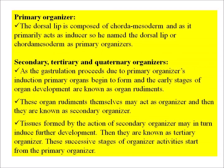Secondary, tertiary, and quaternary organizers: as gastrulation proceeds, due to the primary organizer's induction, primary organs begin to form and the early stages of organ development are known as organ rudiments. These organ rudiments themselves may act as organizers and are then known as secondary organizers. Tissues formed by the action of secondary organizers may in turn induce further development, and they are then known as tertiary organizers. These successive stages of organizer activities start from the primary organizer.